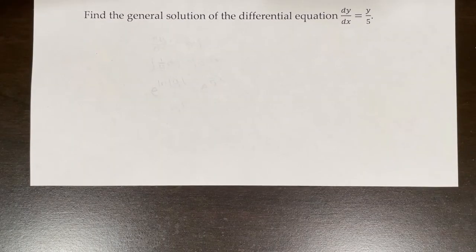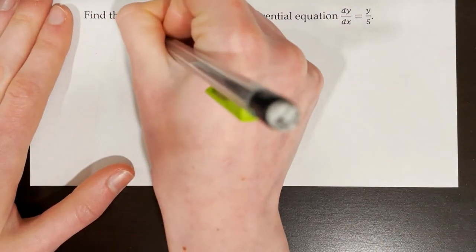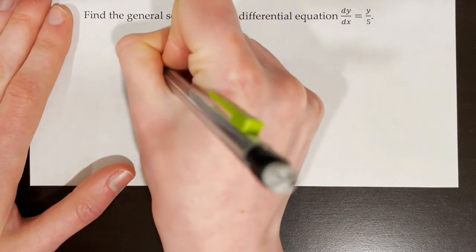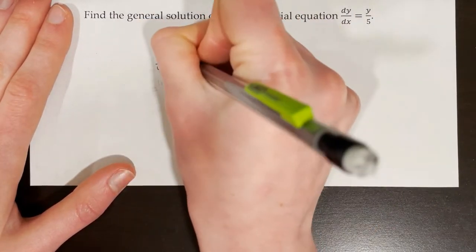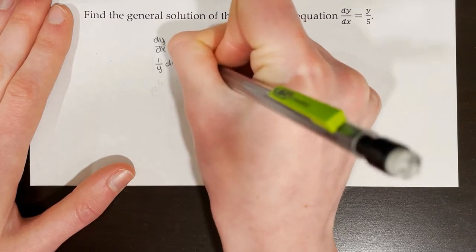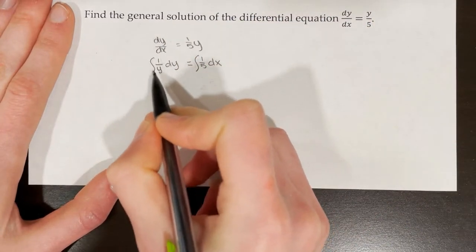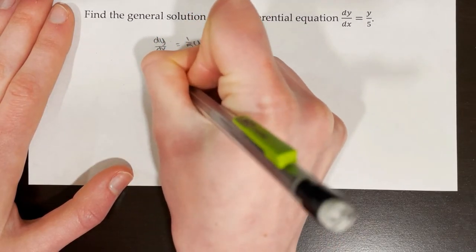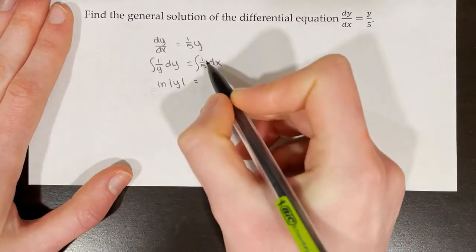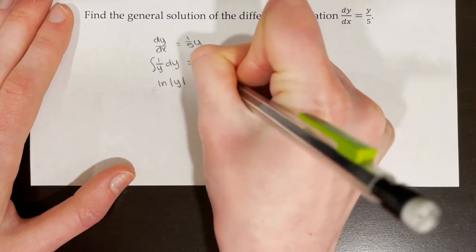Find the general solution of dy/dx = y/5. First rewrite as (1/5)y. Divide both sides by y, writing it as (1/y)·dy — not dy/y, but (1/y)·dy — and multiply both sides by dx to get (1/5)·dx. Integrate both sides: the integral of 1/y with respect to y is ln|y|, and the right side gives (1/5)x + c.